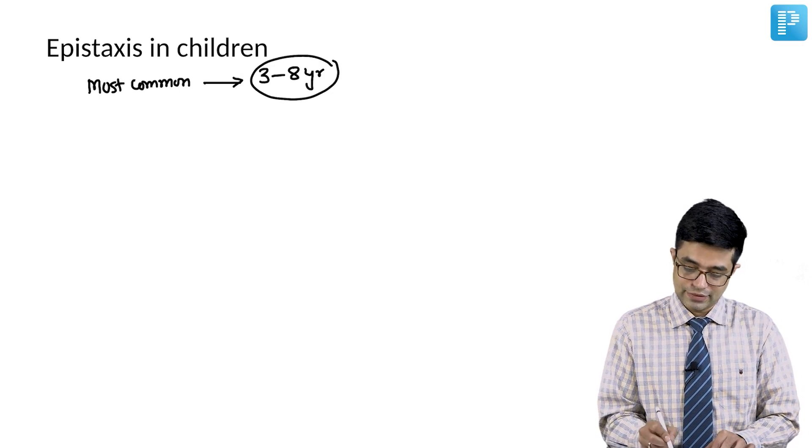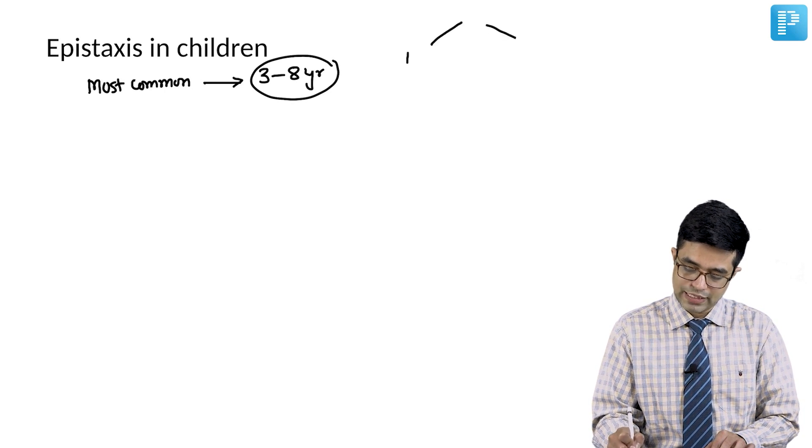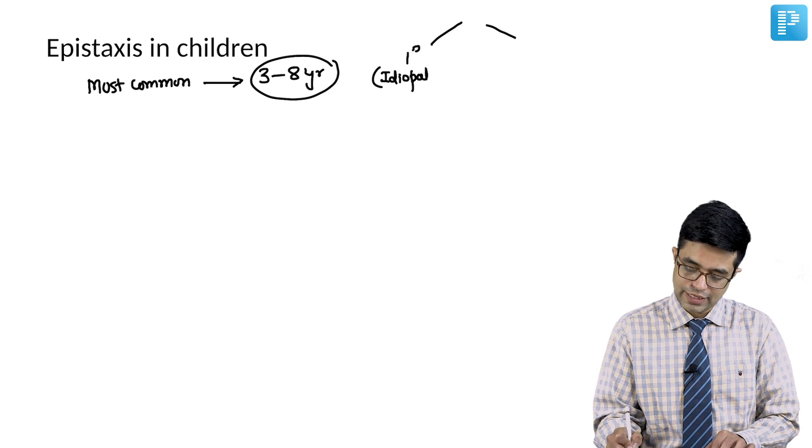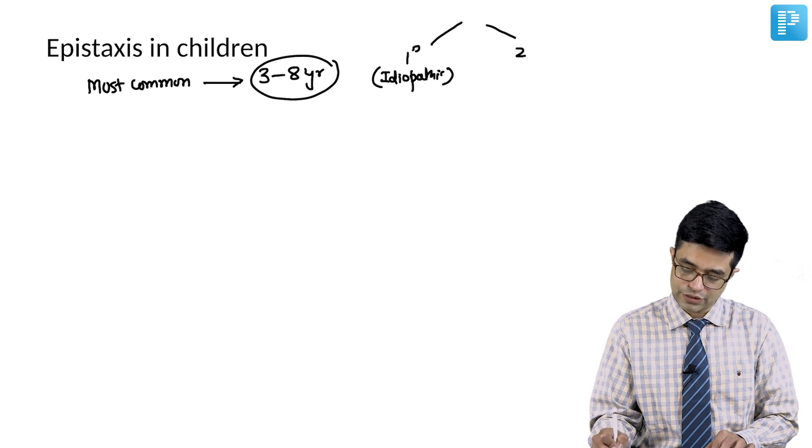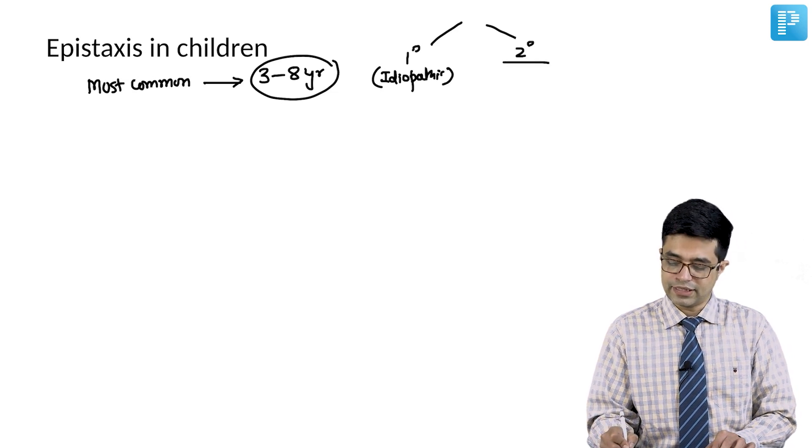Epistaxis can be divided into two parts. It can be primary, also known as idiopathic, which is most common. And then you can have secondary causes where there is an underlying cause.